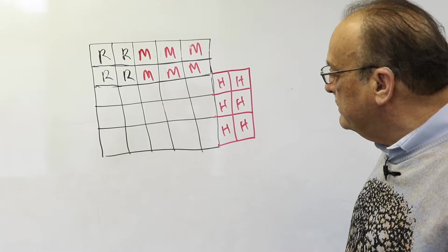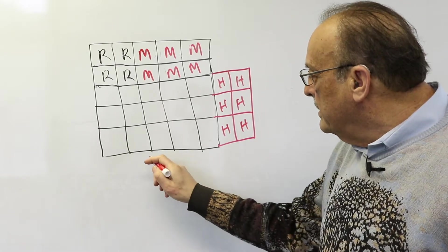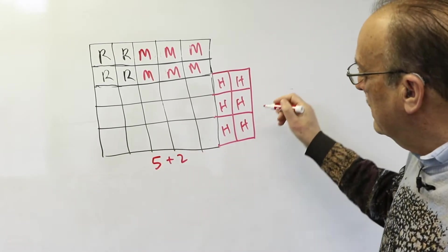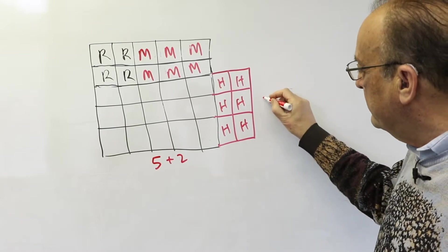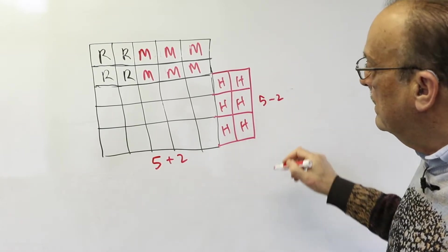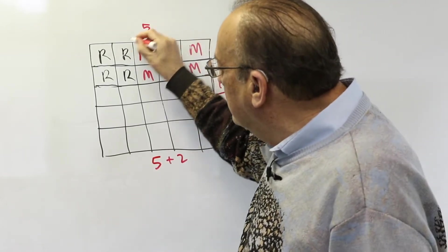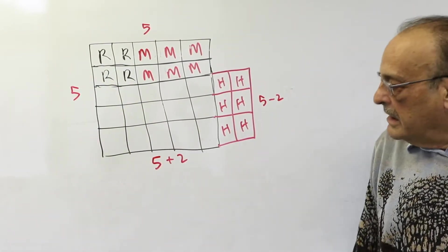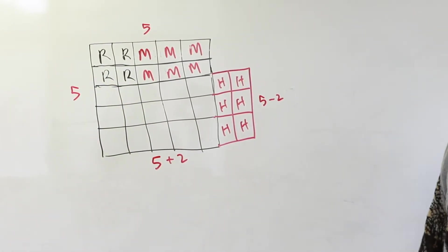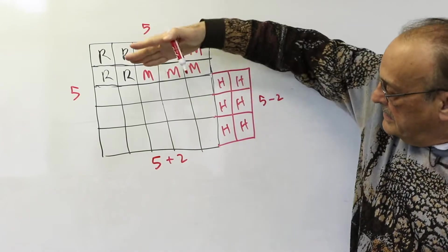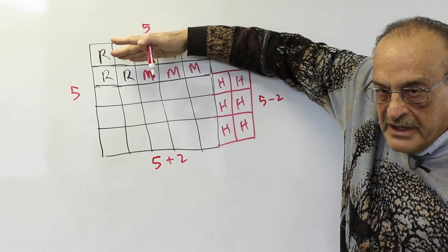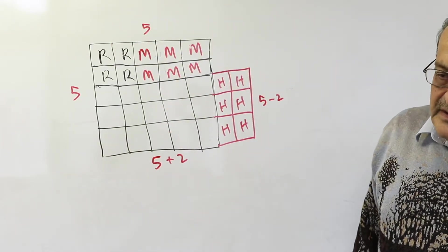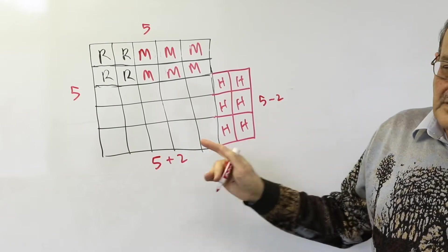I can label the bottom here 5 plus 2 and the side here 5 minus 2. So I'm changing a 5 by 5 square to a 7 by 3 rectangle, and in the process I lose 4 units of area but I don't lose any perimeter.